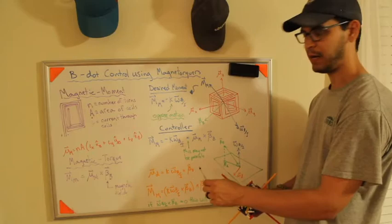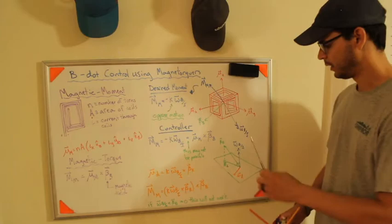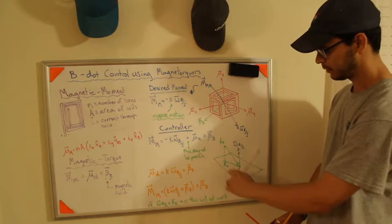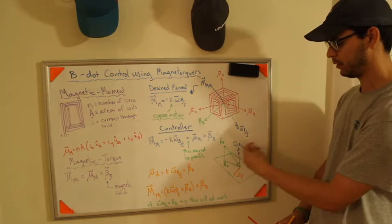Now the problem is, is that this may not be possible. And to highlight that, I drew this diagram here. If you put the magnetic field vector like this and you make a plane, right, this magnetic field vector, because it's an independent variable, it can be anywhere in space.